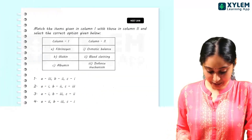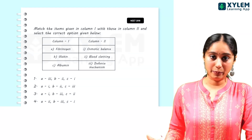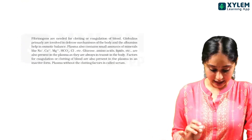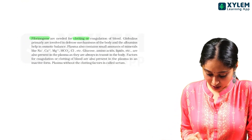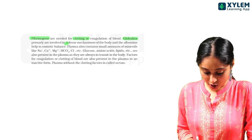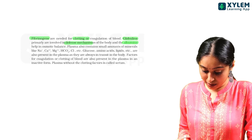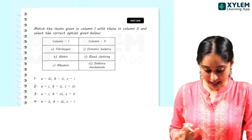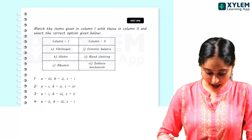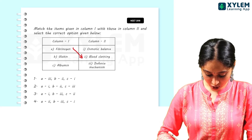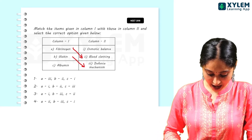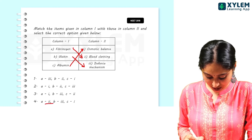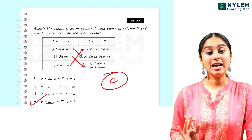NEET 2018 match the following question. Here we have fibrinogen, globulin, and albumin. Fibrinogens are needed for blood clotting. Globulins are needed for the defense mechanism. Albumins are needed for osmotic balance. So we map fibrinogen to blood clotting, globulin to defense mechanism, and albumin to osmotic balance. The answer is option 4.